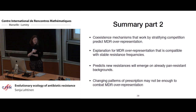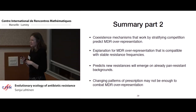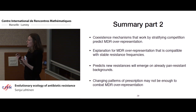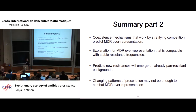To summarize part two: coexistence mechanisms that work by stratifying competition into independent strata predict this trend of MDR overrepresentation. This is therefore an explanation for MDR overrepresentation that is compatible with stable resistance frequencies — which is interesting because sometimes this trend is interpreted as evidence that multidrug resistant strains are out-competing other strains. In terms of public health implications, this model predicts that new resistances will emerge in already pan-resistant backgrounds, because that is where the benefit of resistance is greatest, and that changing patterns of prescription is not necessarily enough to combat MDR overrepresentation.